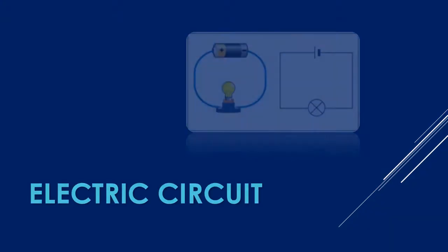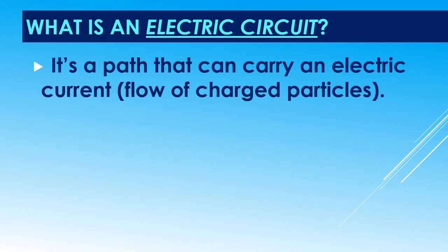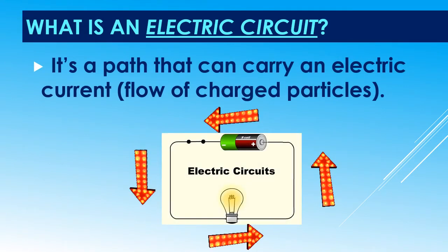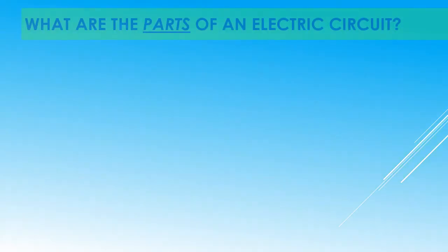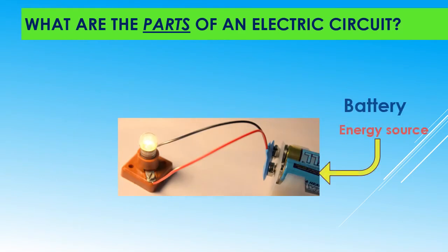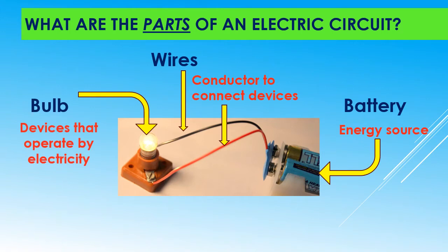Electric circuit. What is an electric circuit? It's a path that can carry an electric current — a flow of charged particles. What are the parts of an electric circuit? An energy source, like a battery or electrical outlet like the one at your home or school; a device that is operated by electricity, like a bulb; and a conductor to connect devices, like wires.